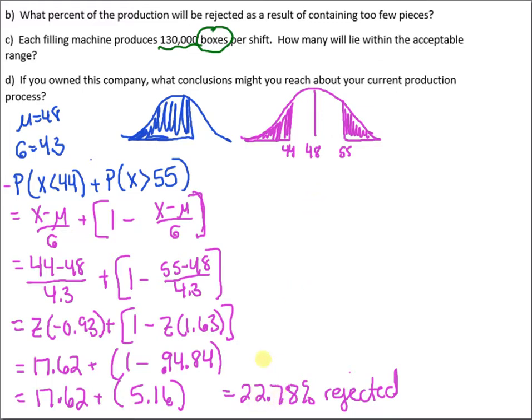Well, we know that 22.78% are rejected, so 0.2278. If we actually think about it, 77.22% are going to be good. Happy face.